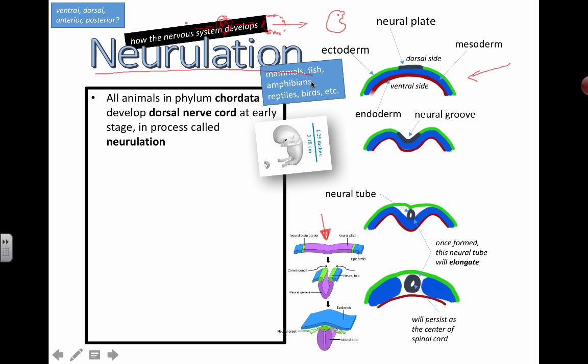fish, amphibians, reptiles, and birds. They all develop a dorsal nerve cord at the early stage of development. And that process is called neurulation.